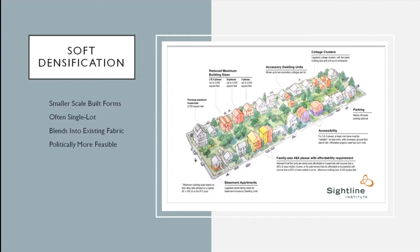Soft densification, in contrast, tends to be a smaller scale, more incremental form of densification that can often be undertaken on a single lot — increasing the number of units from say one or two to three or four. These soft densification measures can supplement higher-density projects built in politically easier locations and provide family-sized, ground-oriented housing typologies.